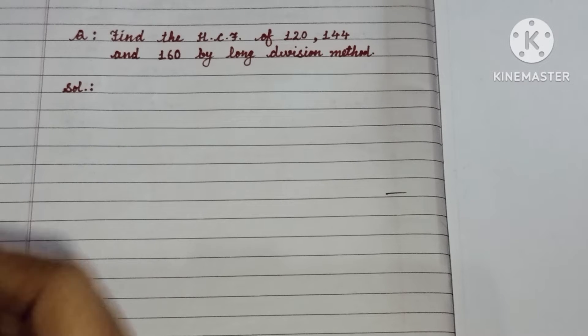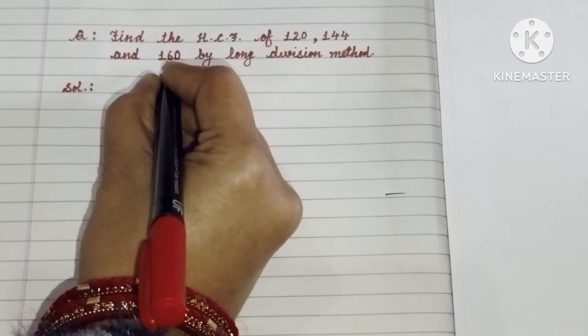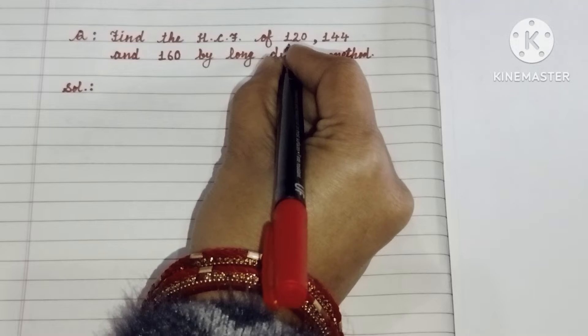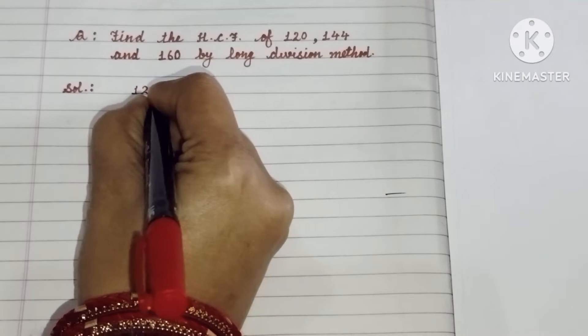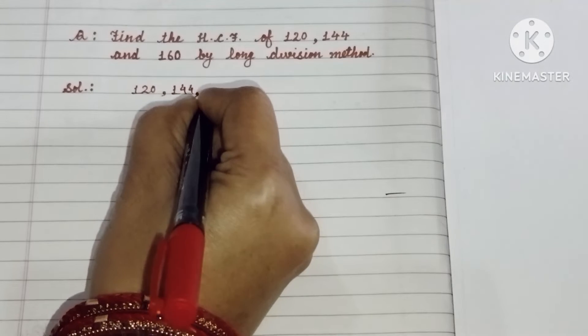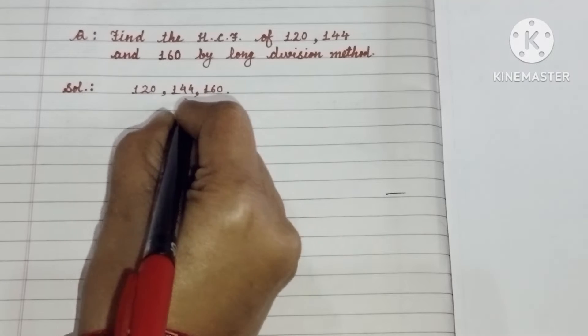As we have a question, find the HCF of 120, 144 and 160 by long division method. Aakko bita HCF find karna hai given numbers ka. So we have given numbers 120, 144 and 160. Three numbers are given and to find the HCF of these three numbers.